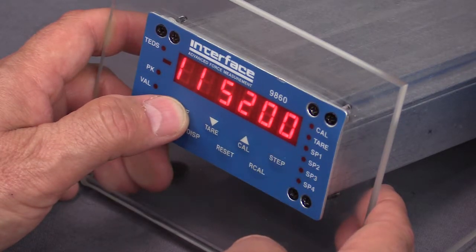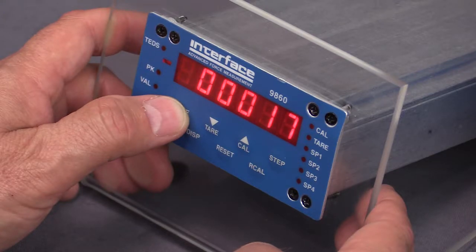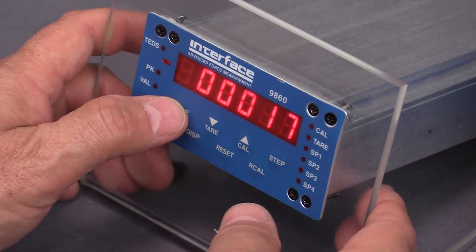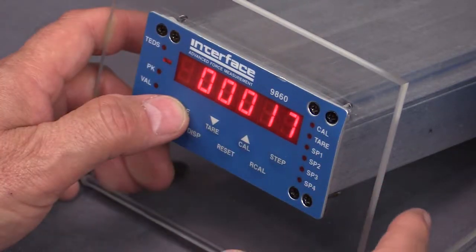And then the baud rate we'll leave at the default which is showing on the screen, 115200, and then run. Basically what that's doing is it's saving the programming that we just did for the settings.